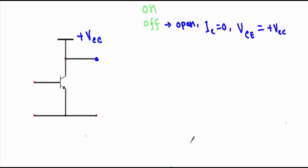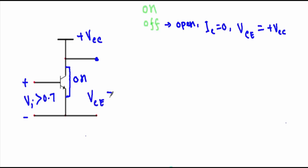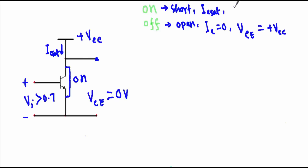If I apply an input base-to-emitter voltage Vi greater than 0.7 volt, our transistor will be in on state or saturation mode. When the transistor is in on state, the collector and emitter terminals will get shorted. Therefore the voltage between the collector and emitter terminal will be equal to zero volt, because VCE is taken across a short circuit. The current flowing through the collector terminal will be IC saturation current. To summarize: in on state, the collector and emitter terminal get shorted, collector current equals IC sat, and VCE equals zero volt.